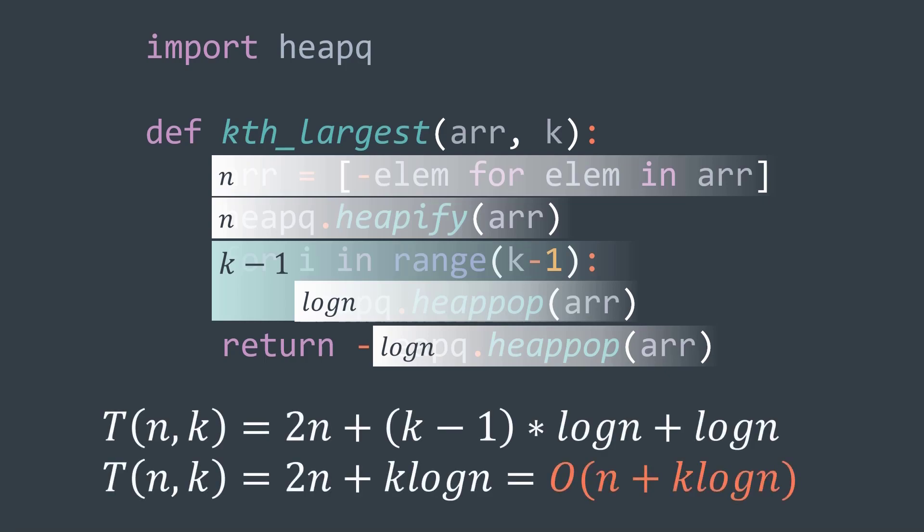In total, we have 2n plus k minus 1 log n plus log n, which is 2n plus k log n, which gives a time complexity of O of n plus k times log n, which is a bit better than the one of the previous solution, because k can't exceed n.